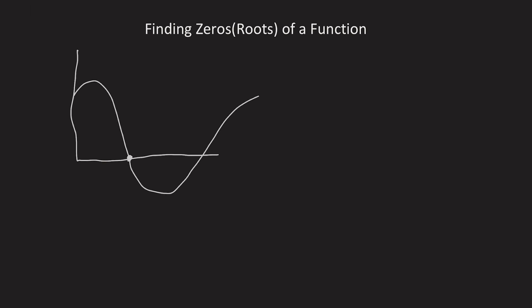A zero is the point on a function where we cross the x-axis. Or not necessarily where we cross it but where we touch it. That means that I could have a parabola like this that just touches the x-axis but it doesn't cross it. That would also be considered a zero or a root of the function.